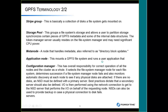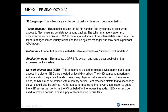Additional terminology: a stripe group is the collection of disks — you can mount a file system on one disk or across multiple disks, resulting in a stripe group. Token managers handle all locking and consistency. Meta nodes handle directory block updates — that's metadata. When you define disks you can define them just for data, just for metadata, or both together. In our simplistic design we did both together, but it's easy to separate them if needed.